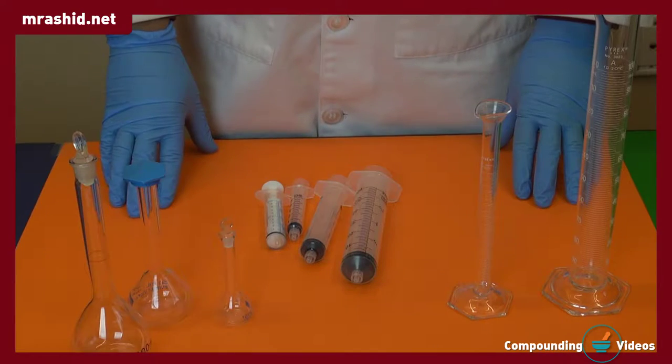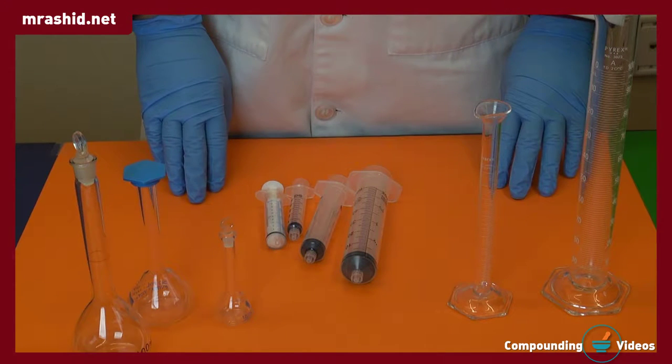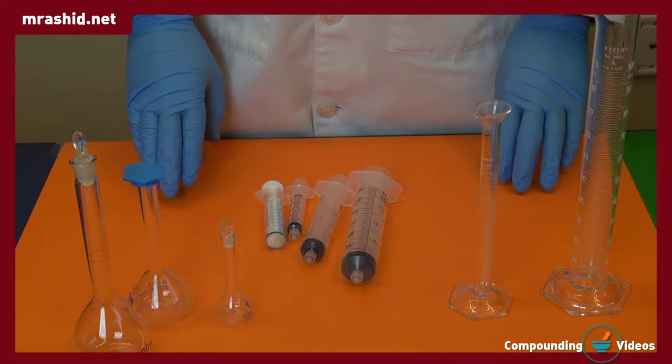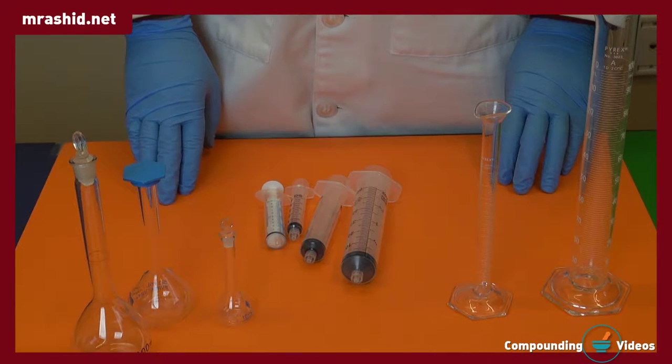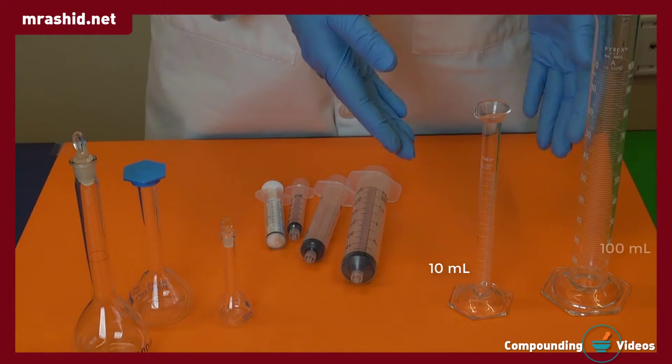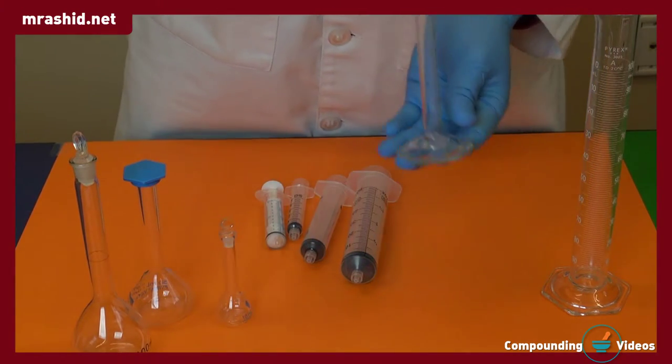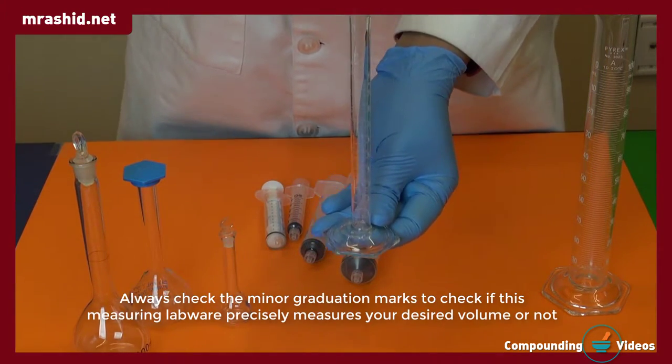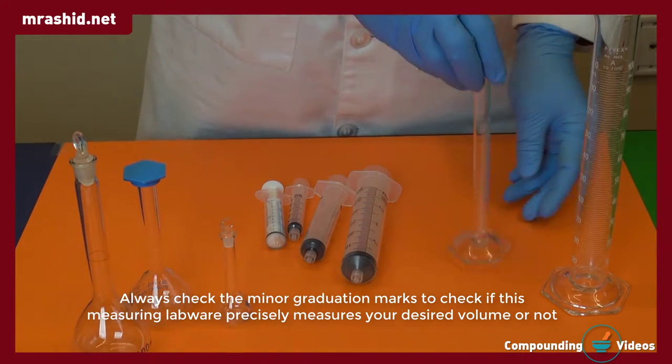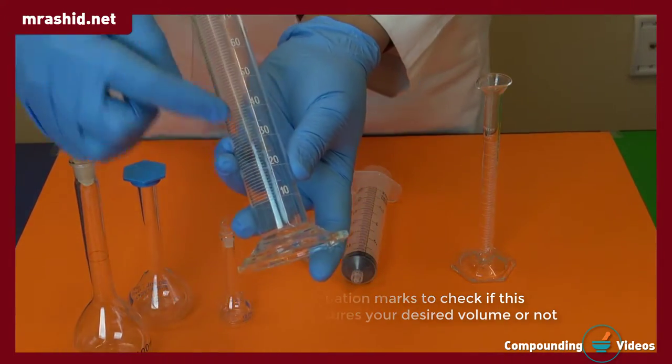Which size of volumetric measuring labware should you use in compounding? The rule of thumb is always use the smallest convenient size labware. Here's a 10ml and a 100ml measuring cylinder. If we need to measure 8ml of a liquid, then this 10ml cylinder should be ideal. The 100ml one cannot be used because it does not have any graduation mark below 10ml.